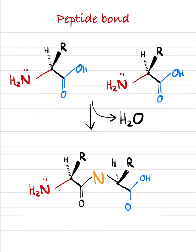That happens through a process called nucleophilic attack. What basically happens is we have a lone pair on the amino group. This lone pair is going to attack the carbon of the carboxyl group. When that happens, the carbon is now satisfied and it's going to send the extra electron into the double bond.